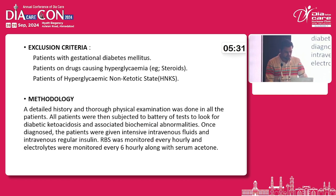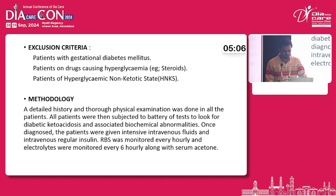Methodology: a detailed history and thorough physical examination was done in all patients. All patients were then subjected to a battery of tests to look for diabetic ketoacidosis and associated biochemical abnormalities. Once diagnosed, patients were given intensive IV fluids and IV regular insulin. RBS was monitored every hour and electrolytes were monitored every 6 hours, along with serum acetone.